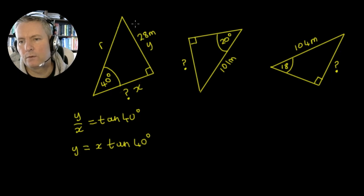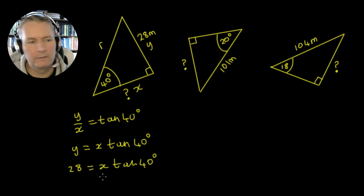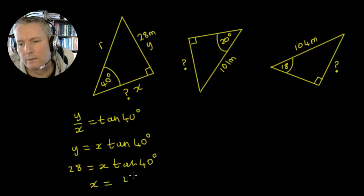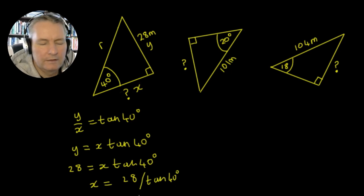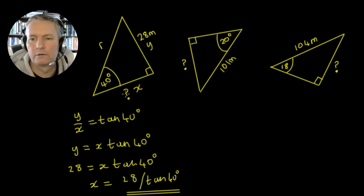We know the y height is going to be 28. So we've got 28 equals x tan 40 degrees, which means x is going to equal 28 divided by the tan of 40 degrees. We can put this into the calculator and get the value for x.